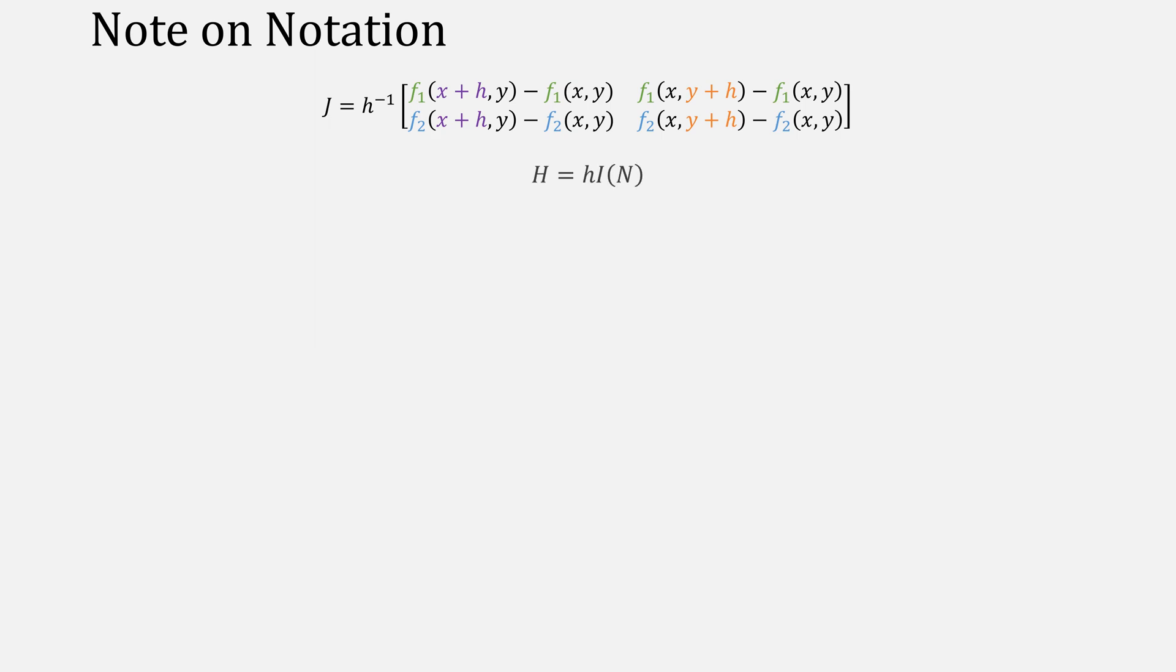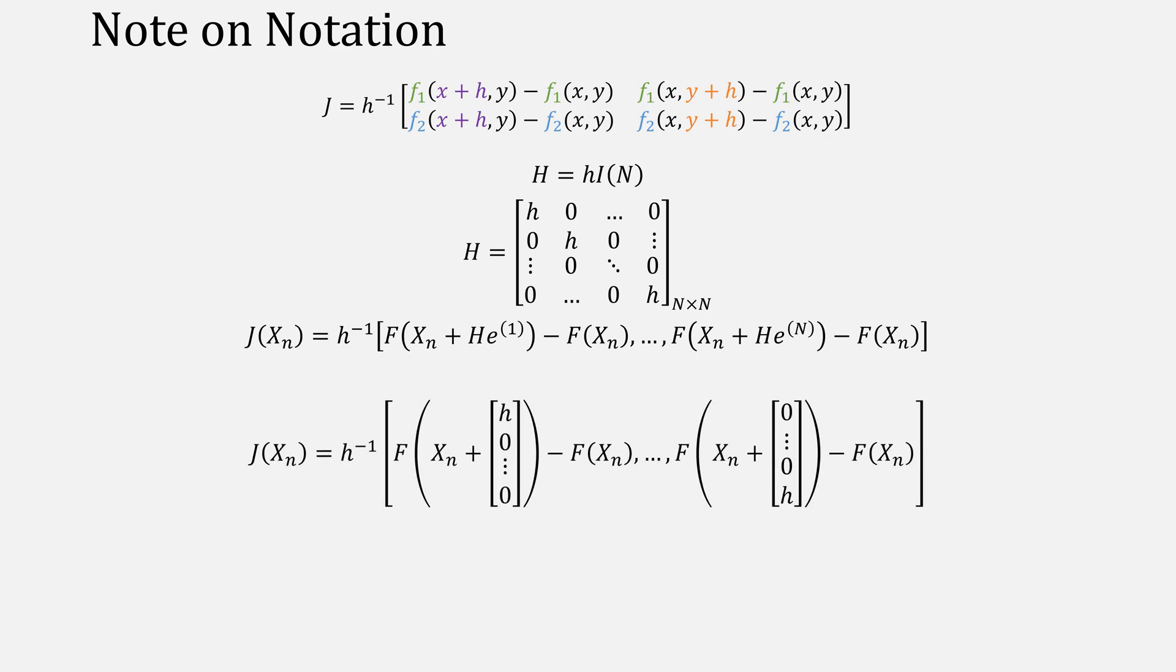Let's let capital H be little h times the identity, giving something it looks like this. It's useful in this kind of equation to give a more formal explanation of the Jacobian. It actually expands to something like this, but is shorter than the other equation.